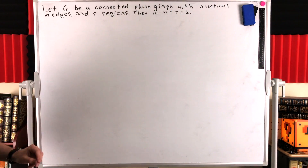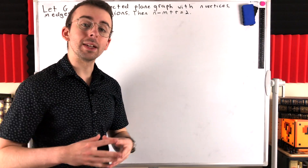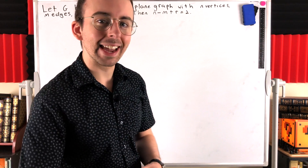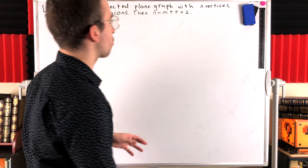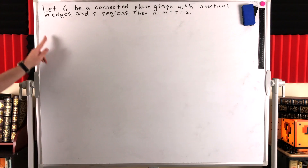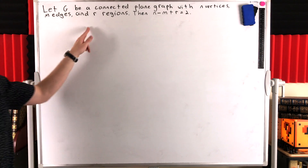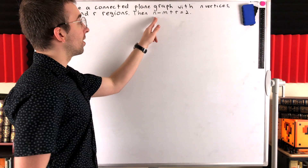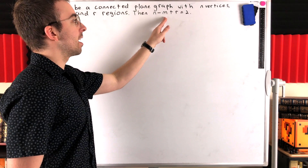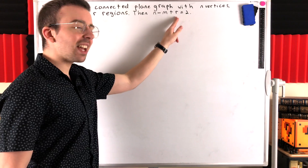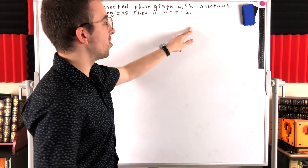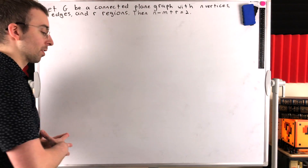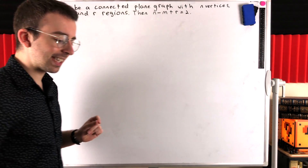Let G be a connected plane graph, which means G has been drawn in the plane with no edge crossings. It's got N vertices, M edges, and R regions. Then the number of vertices minus the number of edges plus the number of regions is equal to two. Really beautiful result — we'll be proving it today.